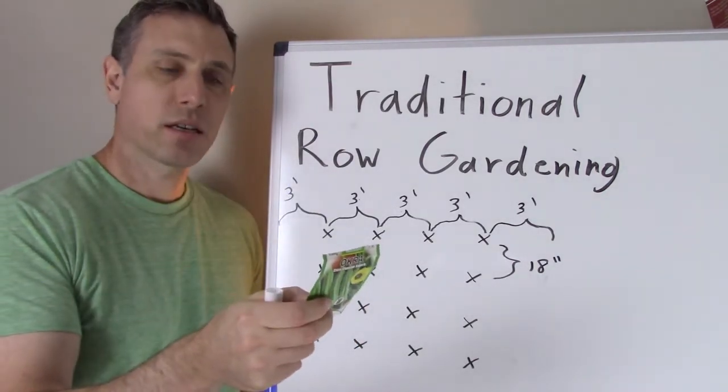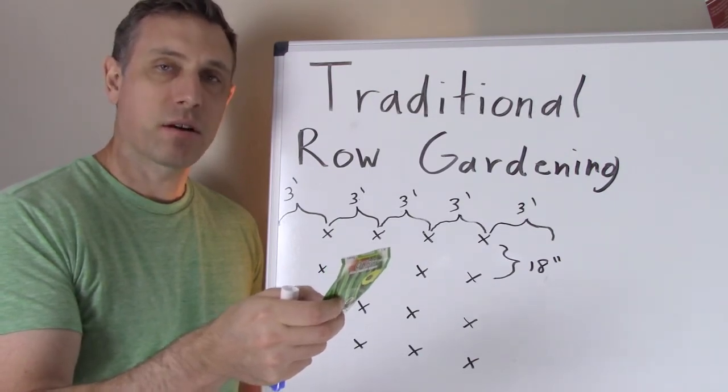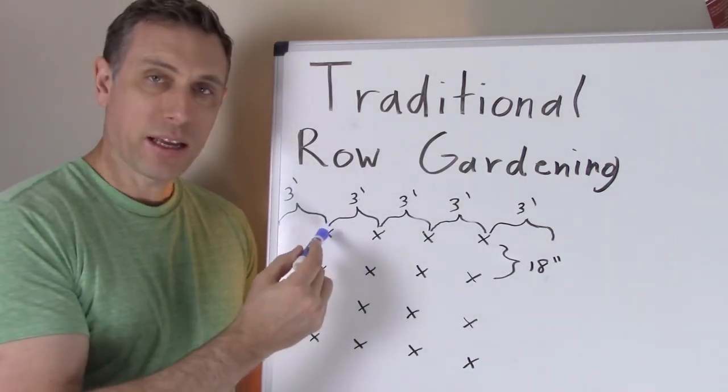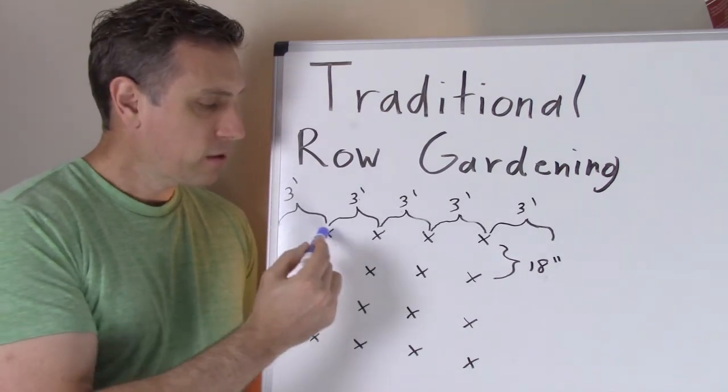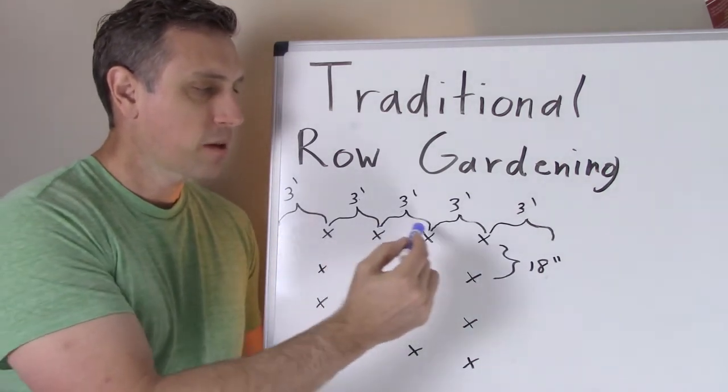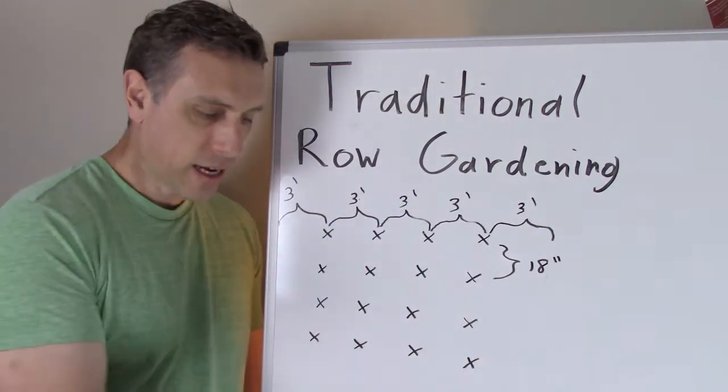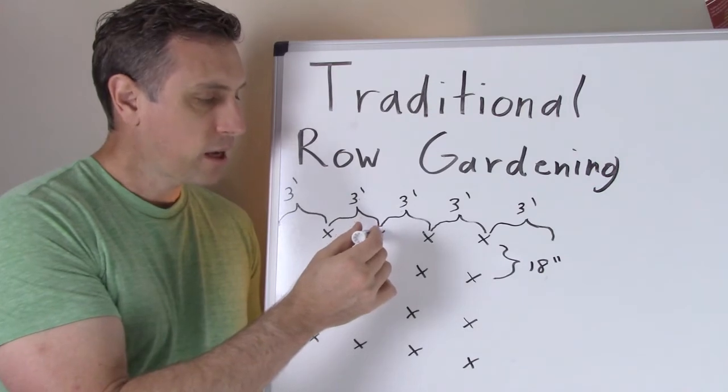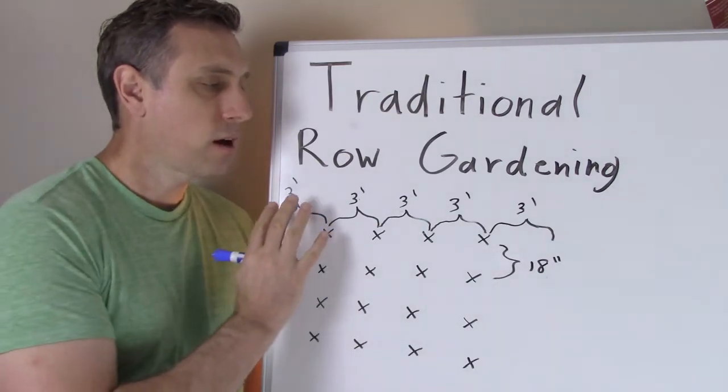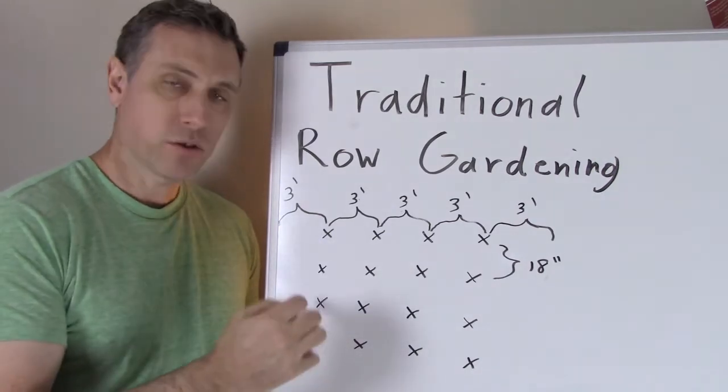So on this package of okra it says spacing, row is going to be three feet apart and the plants are going to be 18 inches apart. So what they mean by that is your rows, so pretend this is an okra plant, each of these x's. And between each row of okra you're going to have three-foot paths. And then it said 18 inches for each plant. So from one plant to the next is going to be 18 inches. So you can see we're using a lot of paths. We have a lot of path area for every actual plant.